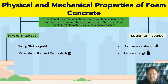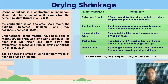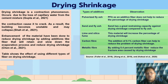Now we look at the physical and mechanical properties of foam concrete, which consist of drying shrinkage, water absorption and permeability, compressive strength, and tensile strength. Drying shrinkage is a contraction phenomenon due to the loss of capillary water from the cement mixture; this crack can cause the building to become unstable and may collapse. Enhancements have been made by adding additives such as fibre to retain and slow down the evaporation process. Based on the research, pulverized fly ash, fly ash and lime do not help reduce drying shrinkage, while sand, carbon fibre, and metallic fibre do help reduce the drying shrinkage problem.